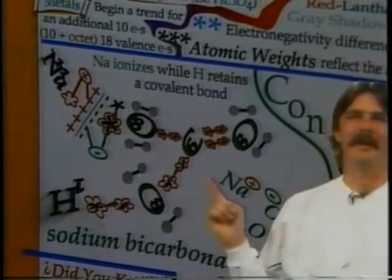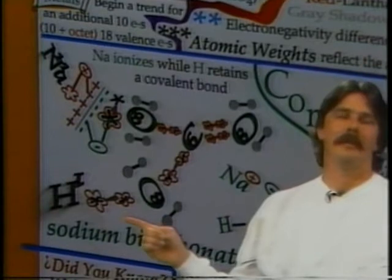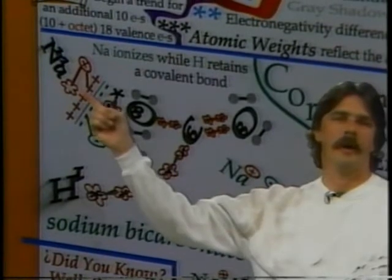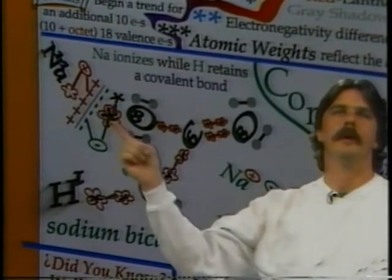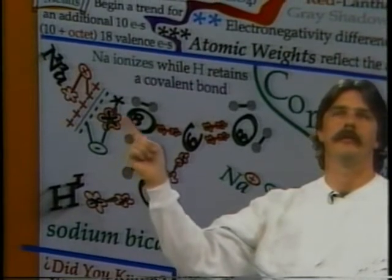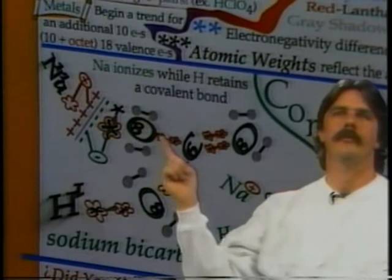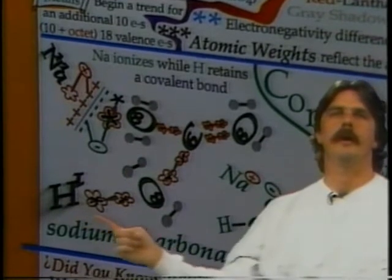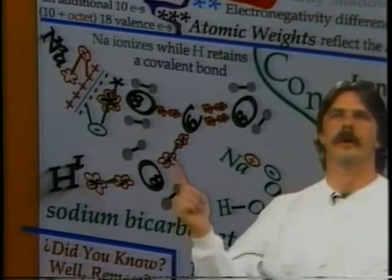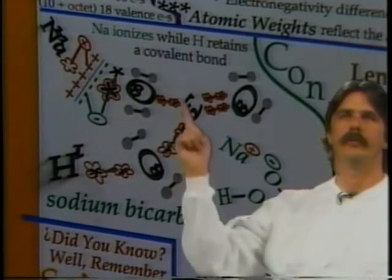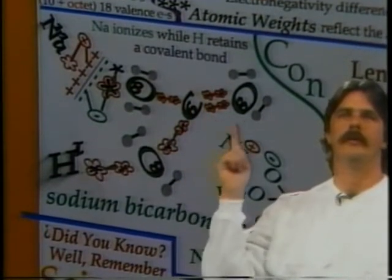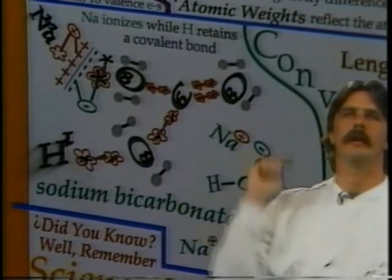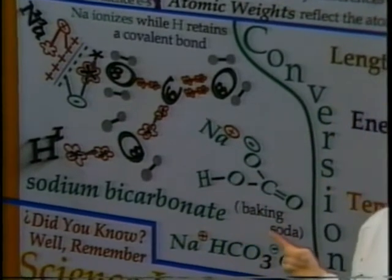To show covalent bonding again in sodium bicarbonate: hydrogen will actually stay covalently bonded to an oxygen, but sodium will become ionized in water. Sodium gives up its electron to fill oxygen's eighth shell, giving oxygen eight electrons. There's a negative charge on this oxygen; hydrogen stays bonded covalently. Carbon follows the octet with eight electrons, and the other oxygen is double bonded to carbon, also with eight electrons. Sodium bicarbonate is known as baking soda.